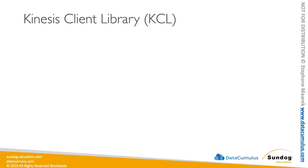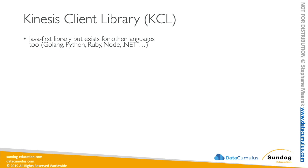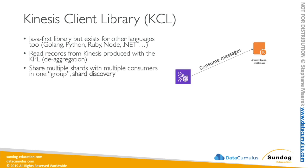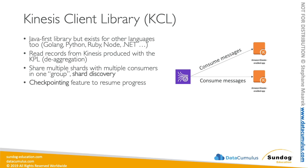Next, let's explore the Kinesis Client Library (KCL). It's a Java-first library that also exists for Golang, Python, Ruby, and Node.NET. It allows you to read records produced with the KPL — where KPL does aggregation, KCL does de-aggregation. With KCL, you can share multiple shards across multiple consumers in one group using a shard discovery mechanism, allowing multiple applications to consume a Kinesis data stream together. It also features checkpointing, so if an application goes down and comes back up, it remembers exactly where it left off.